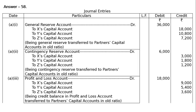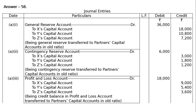Third entry: Profit and Loss account debited Rs.18,000 — it is a credit balance, hence debited for cancellation. To X's capital account Rs.9,000; to Y's capital account Rs.5,400; to Z's capital account Rs.3,600. Being credit balance in Profit and Loss account transferred to partners' capital accounts in old ratio. This is an accumulated profit transferred to old partners' capital accounts in old ratio.